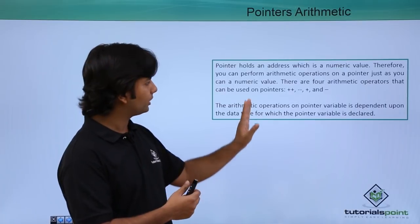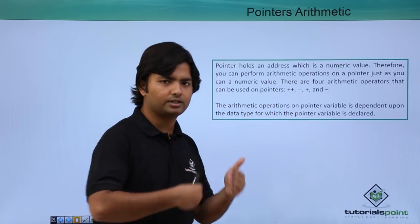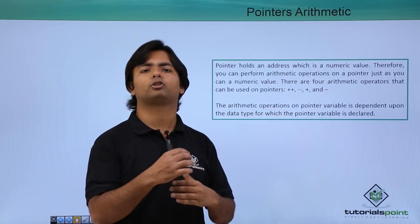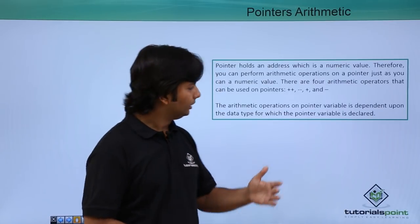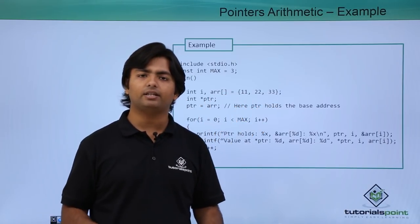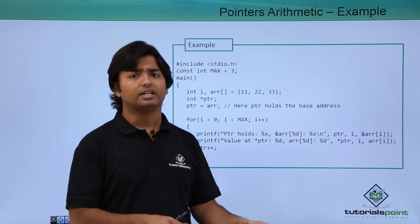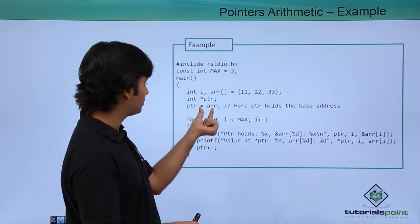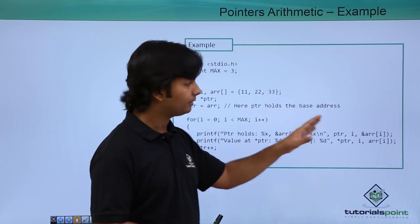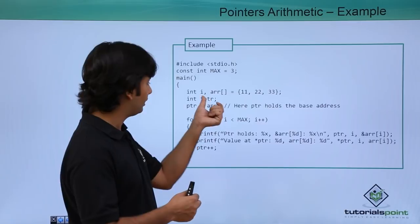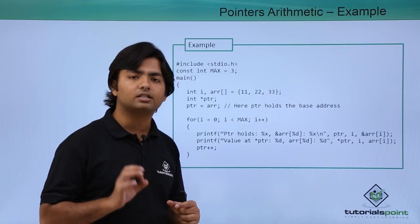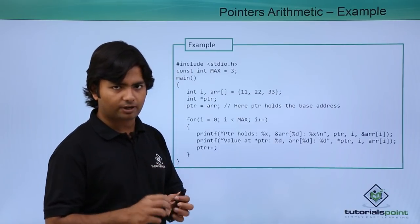For moving in memory you can use ++ or -- for a one-step jump backward or forward, or you can use + or - if you want to jump two or three places directly. Let's see a practical implementation. An array's name is nothing but a constant pointer — we have already discussed that. Here I have stored the address of the array in 'ptr' without using ampersand, because the array name already holds the base address. You cannot do arithmetic with 'arr' directly because it is a constant pointer — its value cannot be changed.